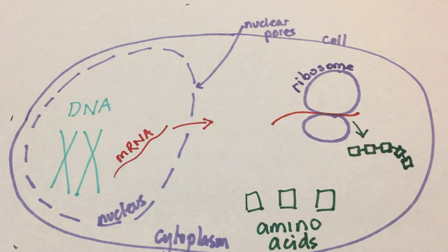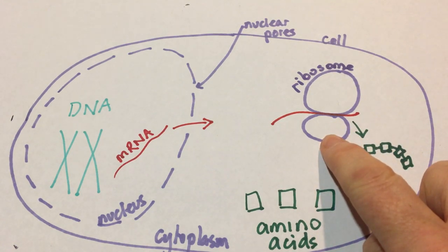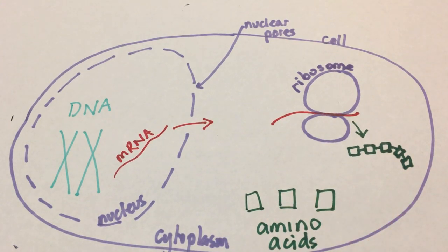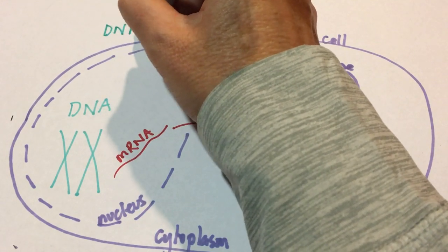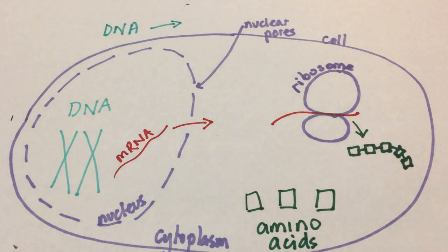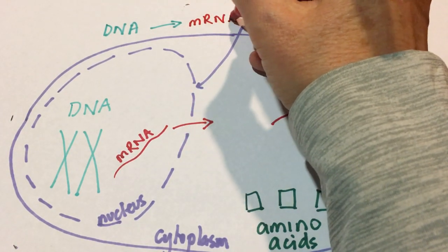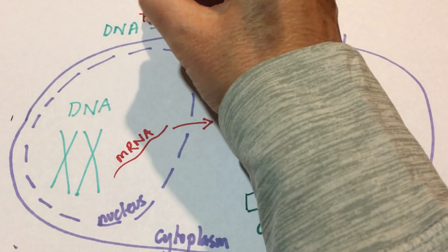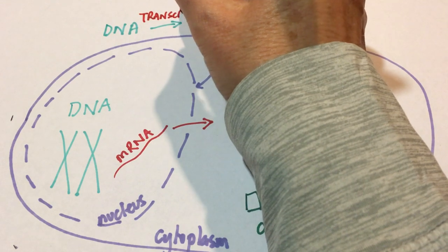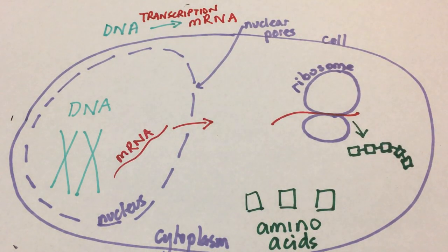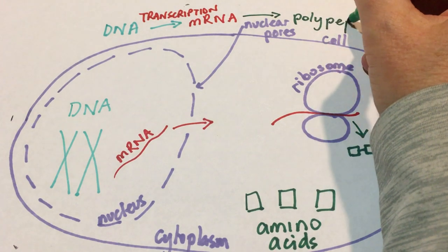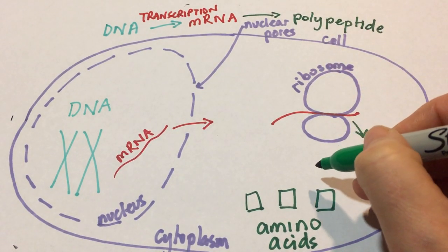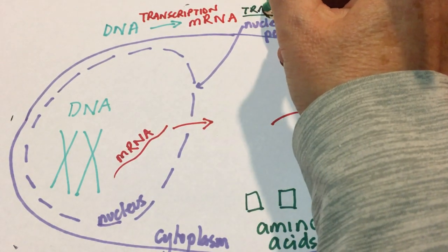And carry that message to allow the amino acids to join in order. These processes that are happening are called transcription and translation. So when DNA is turned into mRNA, which is what's happening here in the nucleus, that process is transcription. And when mRNA is turned into a polypeptide, which is what is happening in the cytoplasm on the ribosomes, that process is called translation.